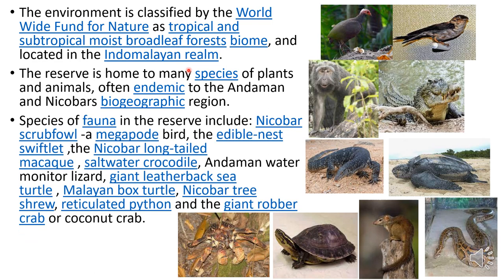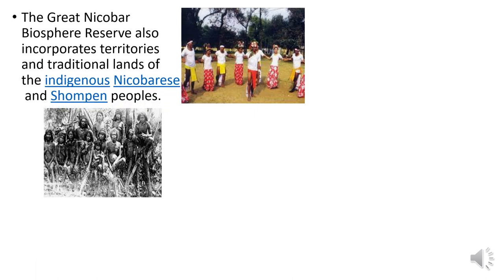The fauna species in the reserve include the Nicobar scrub fowl — a megapod bird — the edible nest swiftlet, the Nicobar long-tailed macaque, the saltwater crocodile, monitor lizard, water monitor lizard, the giant leatherback sea turtle, the Malayan box turtle, the Nicobar tree shrew, the reticulated python, and the giant robber crab or coconut crab. The Great Nicobar Biosphere Reserve also incorporates territories and traditional lands of the indigenous Nicobarese people and the Shompen people.